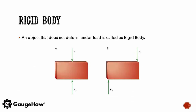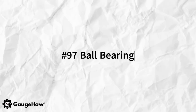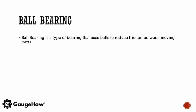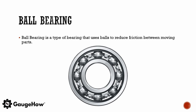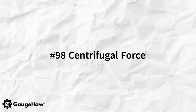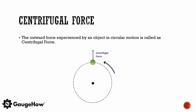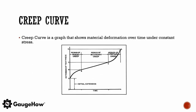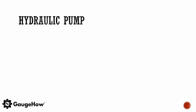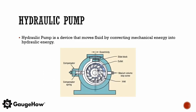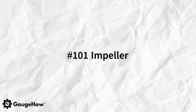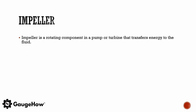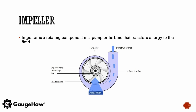An object that does not deform under load is called a rigid body. Ball bearings are a type of bearing that uses balls to reduce friction between moving parts. The outward force experienced by an object in circular motion is called centrifugal force. A creep curve is a graph that shows a material's deformation over time under constant stress. A hydraulic pump is a device that moves fluid by converting mechanical energy into hydraulic energy. An impeller is a rotating component in a pump or turbine that transfers energy to the fluid.